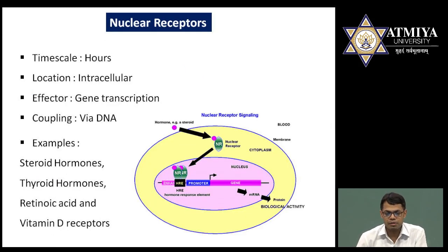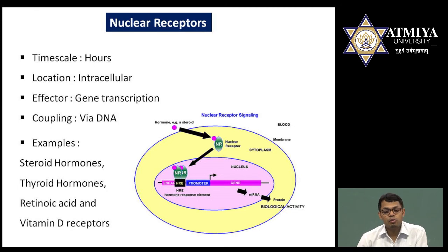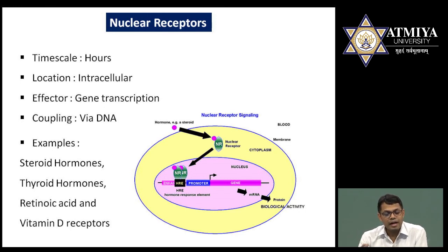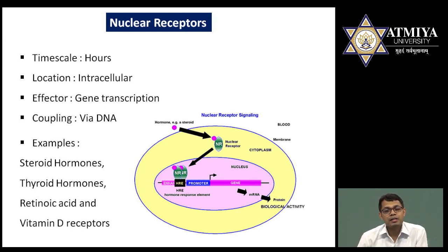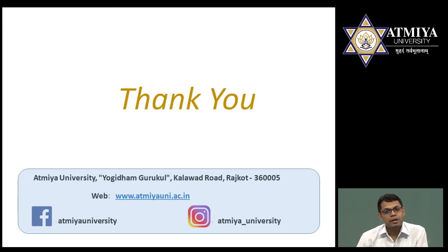The last type is nuclear receptors. The timescale is hours and location is intracellular; the effector molecule is gene transcription. When a molecule enters and binds to nuclear receptors, the receptor-ligand complex enters the nucleus. In the nucleus, hormone-response elements are present; the receptor directly activates the hormone-response element, which acts as a transcriptional factor. Transcription then occurs, followed by translation, and finally biological activity occurs. In further lectures I will explain GPCRs, enzyme receptors, MAP kinase, and JAK-STAT pathway in detail.